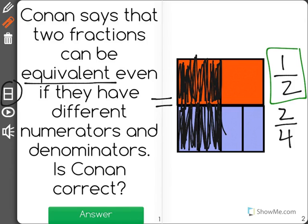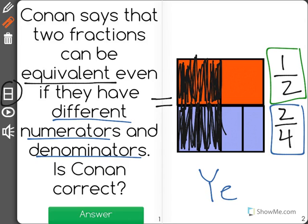The first one is one half and the second one is two fourths. As you can see, they do have different numerators and denominators. So yes, Conan is correct. You can have two fractions that are equivalent if they have different numerators and denominators.